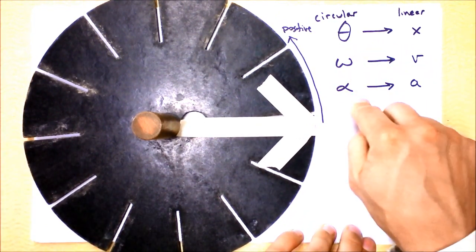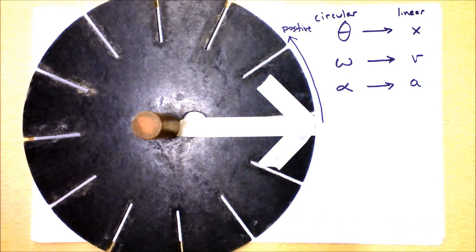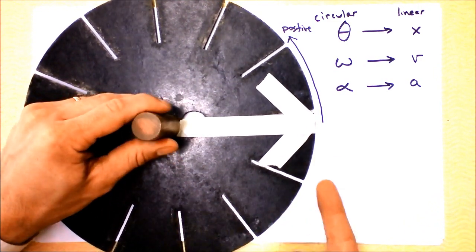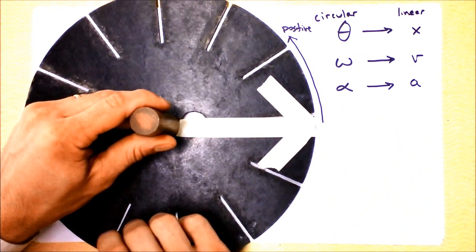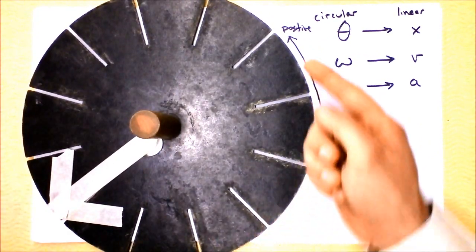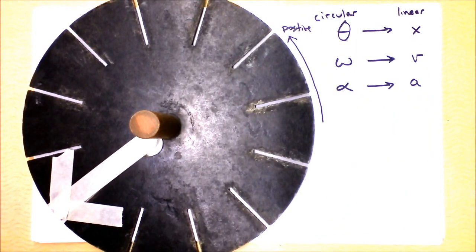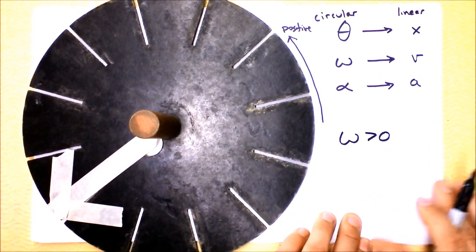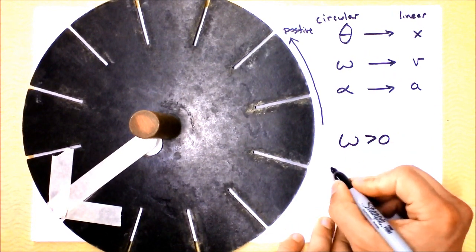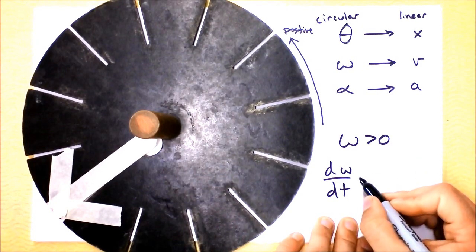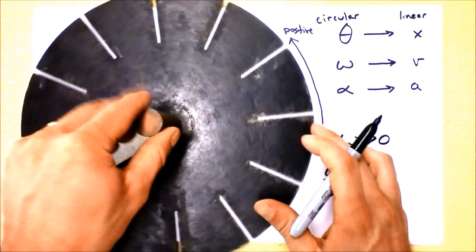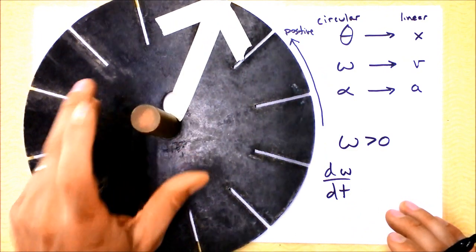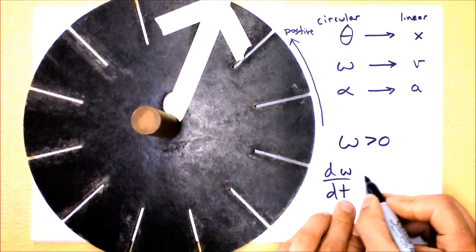But what about angular velocity if there is an angular acceleration? I want you to consider this motion, and I'm going to actually let it slow down deliberately. I'm going to give it a start, and it will be going this way, but slowing down. So it went this direction, and it slowed down. First of all, we can say that omega, omega was positive, right? But what about the change in omega, d omega dt? Was that also positive?